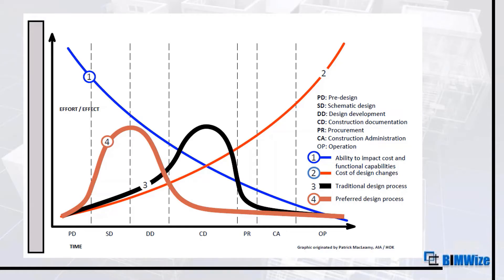This chart is a very good example. It was created by Patrick MacLeamy, a retired CEO from HOK and a well-known entrepreneur. He created this chart to explain how, at the start of a project, we put in maximum effort and the impact of design changes on cost is minimal, while the impact on functional capability is really high. As we reach different milestones over time, these abilities to impact cost and the overall design process shift.